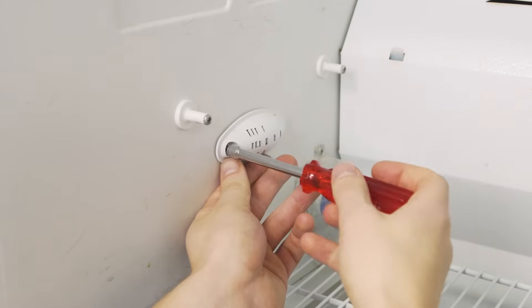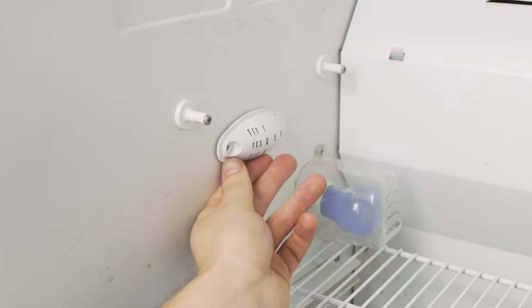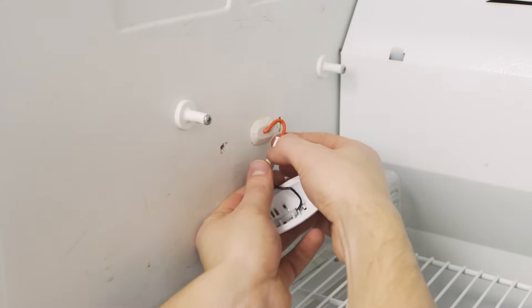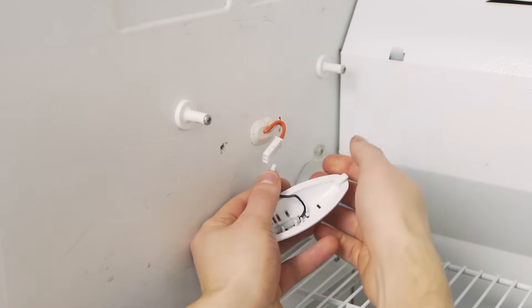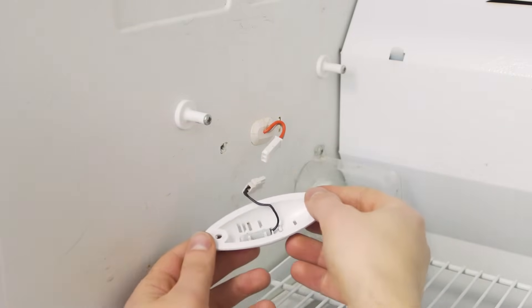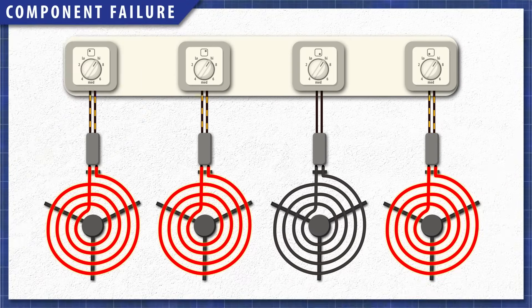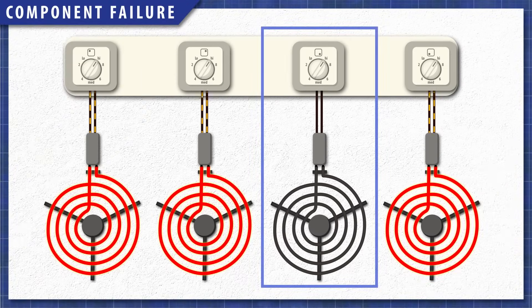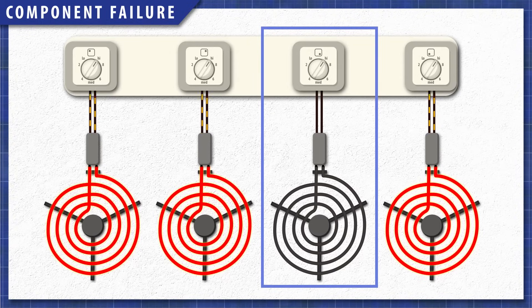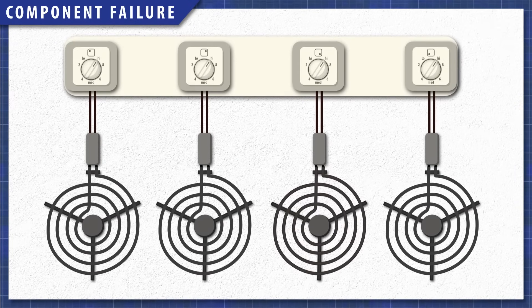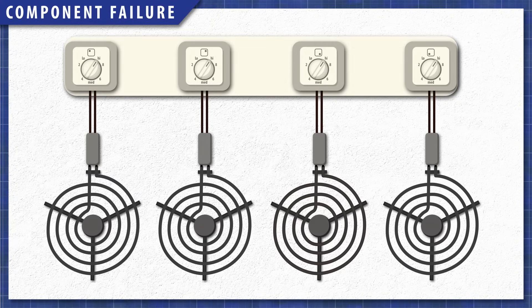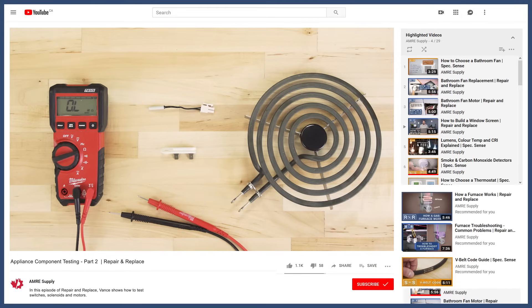This often happens when a component burns out or fails internally. Depending on the component, this might affect the whole appliance or just a particular function. For example, if only one stove element stops working, then it's just an issue with that particular circuit. Now if all the heating elements are not working, then it's likely an issue with the incoming power. You can learn more about testing appliance components in the video linked below.